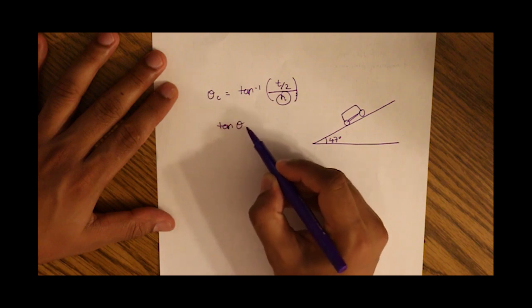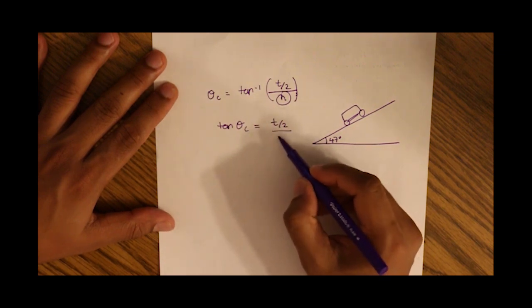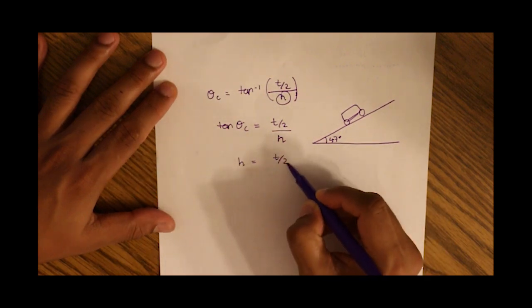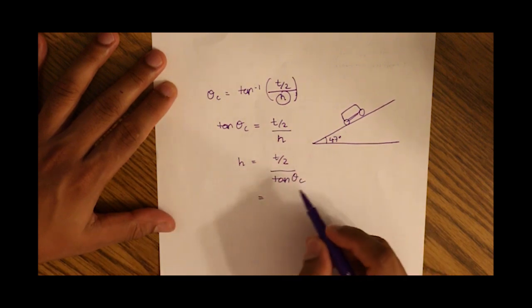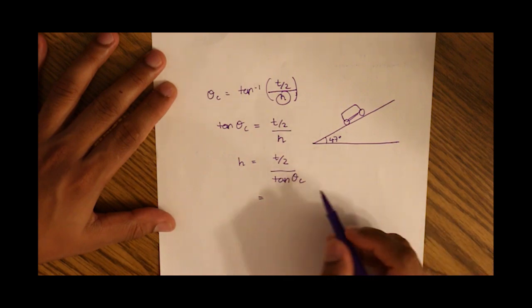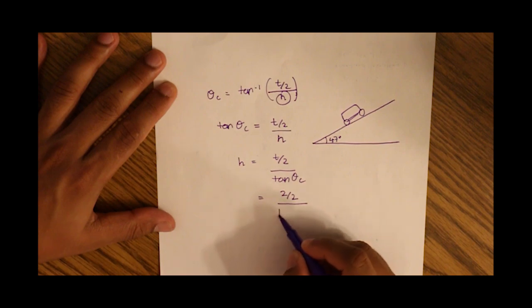So rearranging we can say tan of critical angle equals track width, half of track width over height. So height becomes half of track width over tan of critical angle. So a track width is two meters. So half of that is one meter. So two over two divided by tan of 47 degrees.